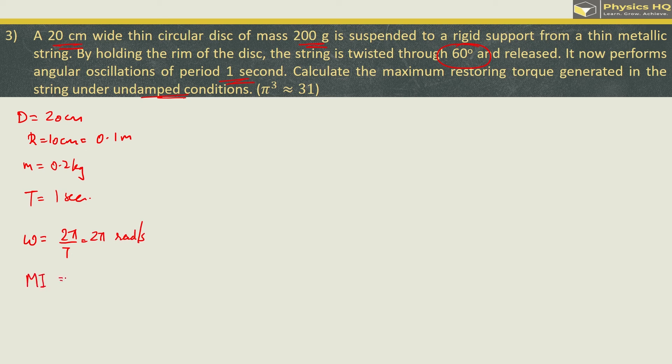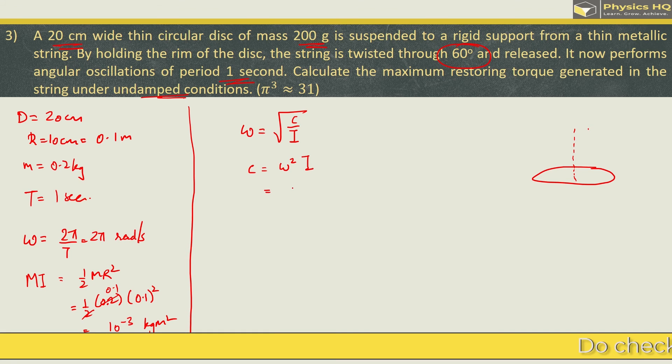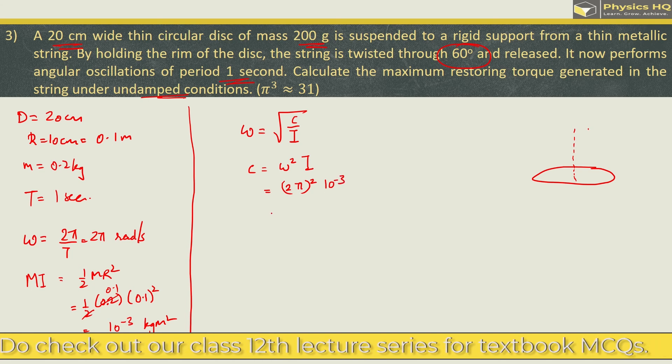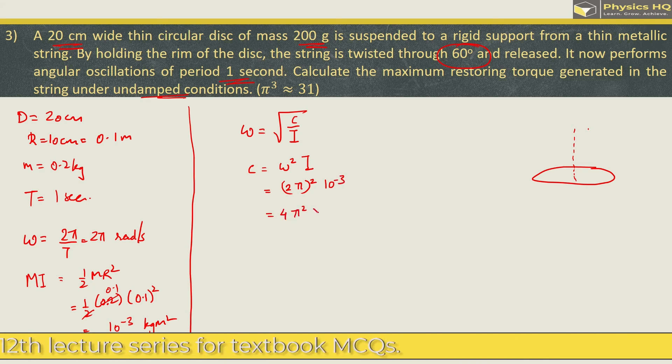So we can calculate omega, so omega is 2 pi by T which is 2 pi radian per second. We can also calculate moment of inertia. Now moment of inertia of the thin circular disc is given by half mr squared for an axis which is transverse and passing through the center of mass. So here we will have half into 0.2 radius is given as 0.1 squared so this will be 10 raise to minus 3 kg meter squared.